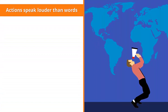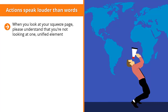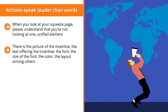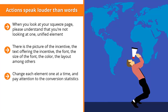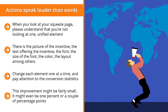Actions speak louder than words. Your squeeze page is made up of many different parts: the picture of the incentive, the text offering the incentive, the font, size of the font, the color, the layout, among others. Change each element one at a time and pay attention to the conversion statistics. Make many different variations and test them against your traffic. You should quickly see that at least one variation has a higher conversion rate — even if the improvement is just one or a couple of percentage points.